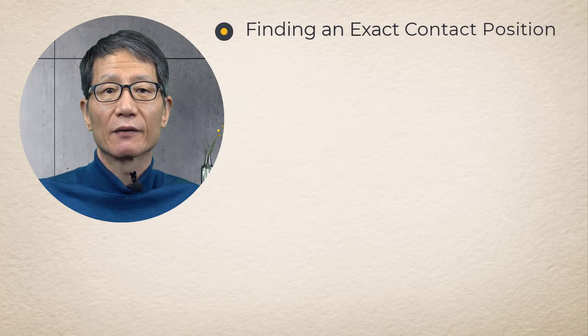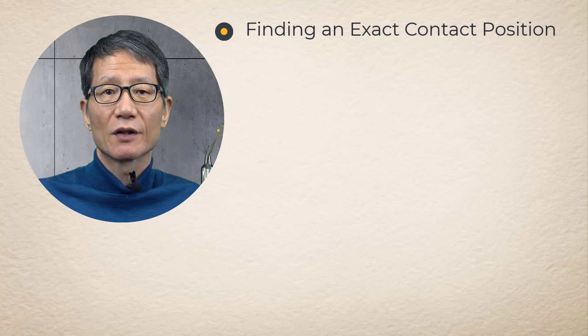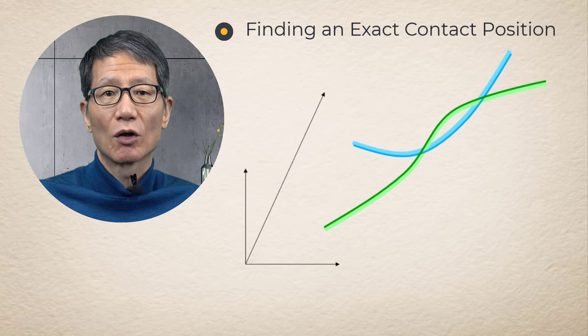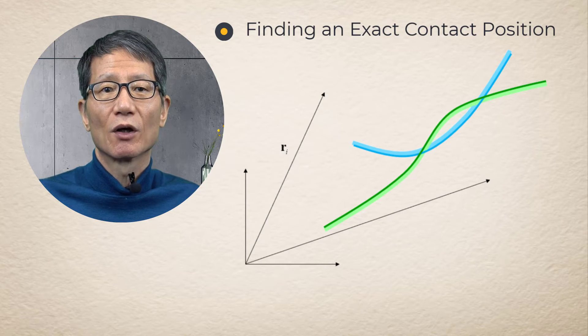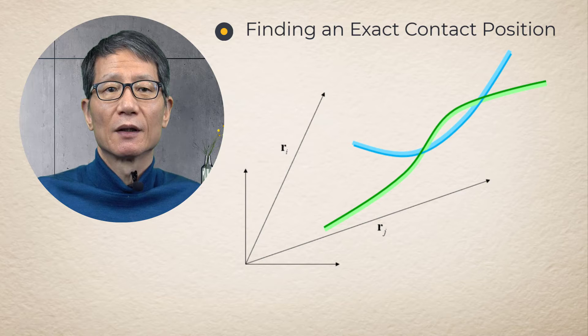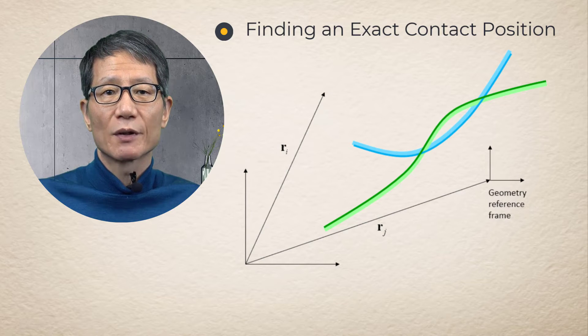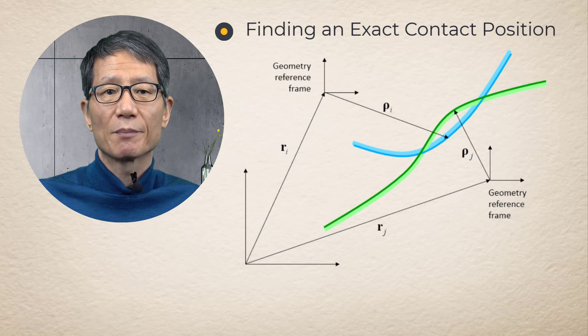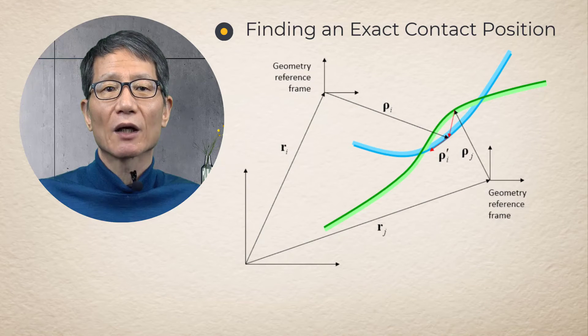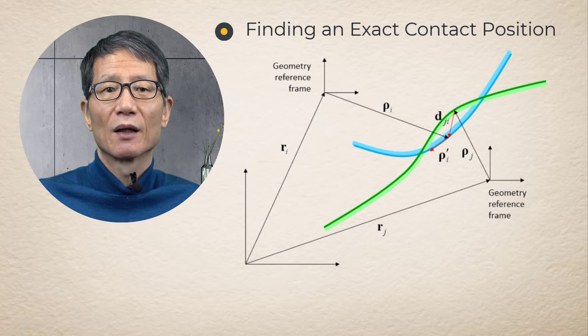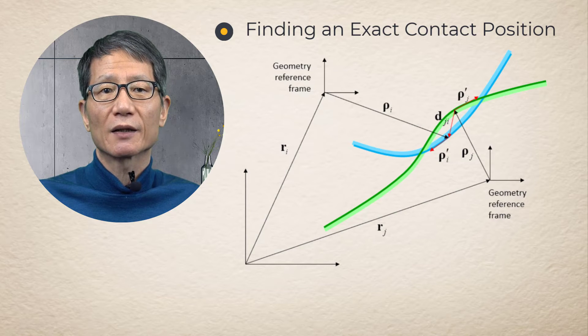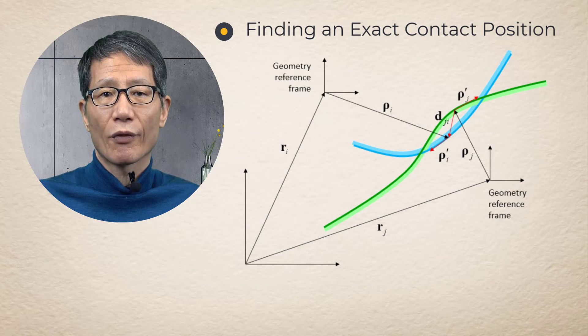Finding exact contact position. A surface equation is parameterized by two independent parameters along two orthogonal directions of the surface. Tangent directions of the surface can be obtained by taking partial derivatives of the surface equation with respect to the independent parameters. Contact conditions are satisfied when the distance vector of two contact positions and tangent vector of the two points are orthogonal.